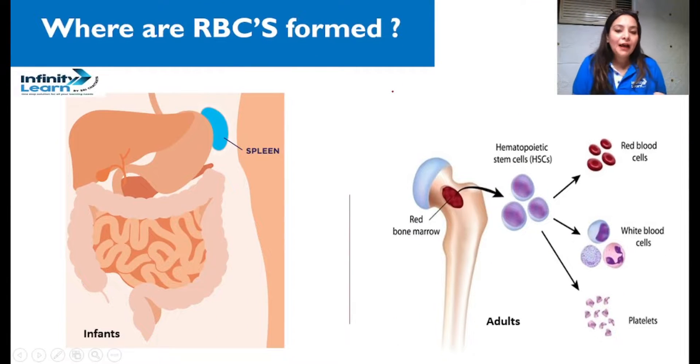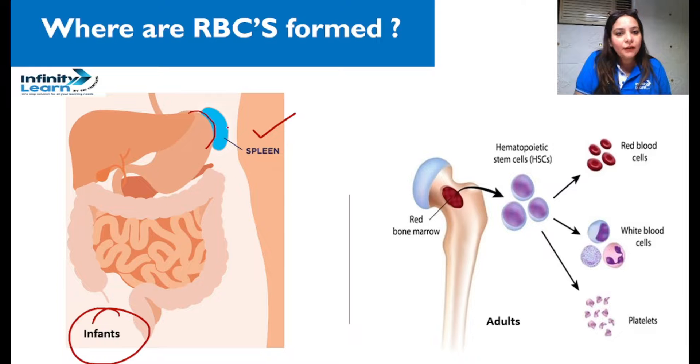Now where are RBCs formed? So let me tell you, in infants, very small children whose bones are not developed, cute small children, in them RBCs are formed in the spleen. Spleen is a part you can see just near to the liver. In adults, where are they formed? In bones, because bones are developed in adults. And in bones, where are they formed? In the bone marrow, means in the cavity of the bones.